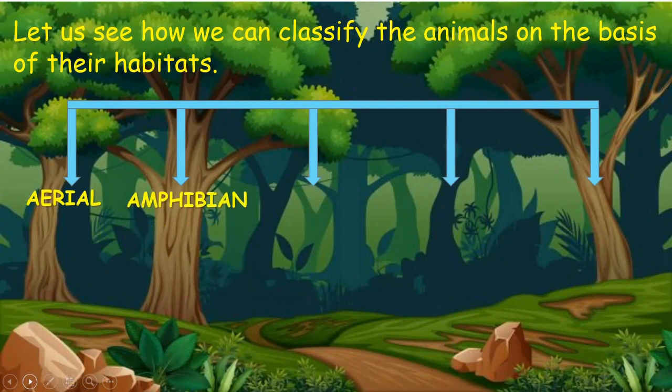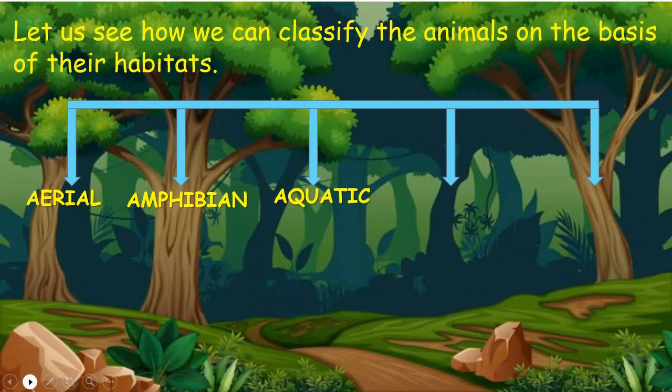Let us now see how we can classify animals on the basis of their habitats: aerial, amphibian, aquatic, arboreal, and terrestrial.